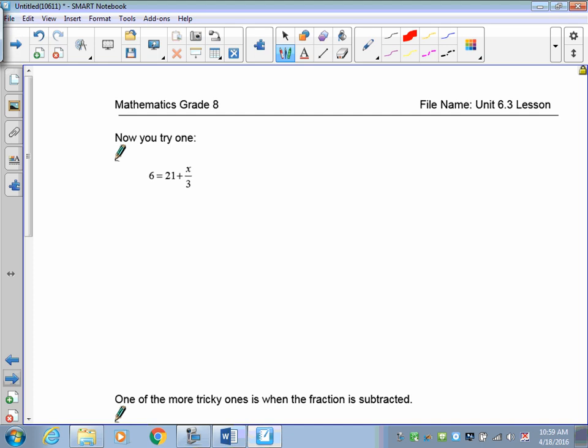Try this one by yourself. The first thing I need to do is to get rid of the loose tiles. The 21's got to go first. This is a positive 21, so I've got to take away 21 to get rid of it. So 6 take away 21 is equal to 21 take away 21, and I keep my x over 3. 6 take away 21 is negative 15. 21 take away 21 is 0 plus my x over 3. That leaves me with x over 3 is equal to negative 15.